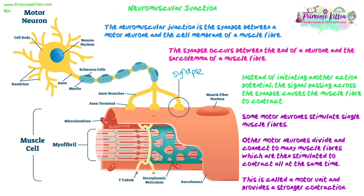Some motor neurons stimulate a single muscle fiber — one motor neuron with multiple axon terminals junctioning onto one muscle fiber. But other motor neurons can divide and split, so multiple axon branches and axon terminals can join up to many muscle fibers at once, which can then be stimulated to contract all at the same time. This is what we call a motor unit, and it provides a stronger contraction.